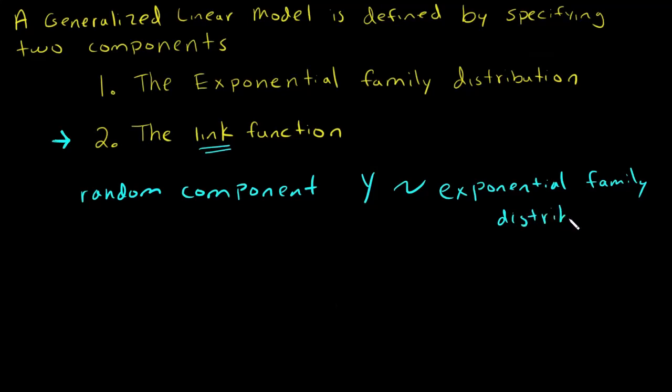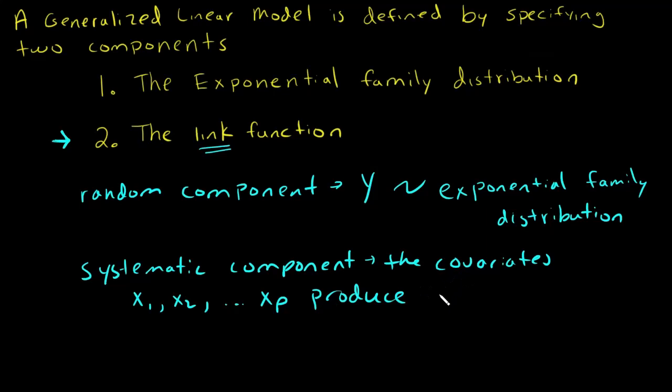Then we also have the systematic component. These are our covariates, the covariates variables x1, x2, all the way through to xp, however many covariates we have that we use to produce a linear predictor, and we're going to call this nu. This is a linear predictor because we are talking about generalized linear models.